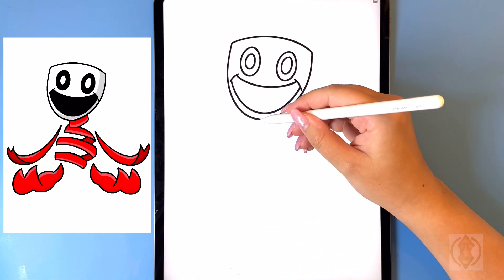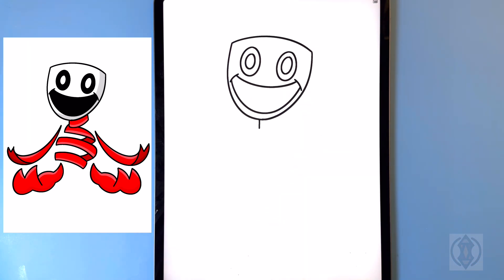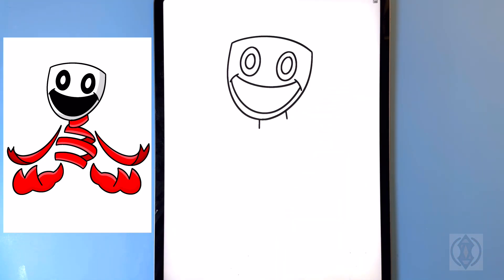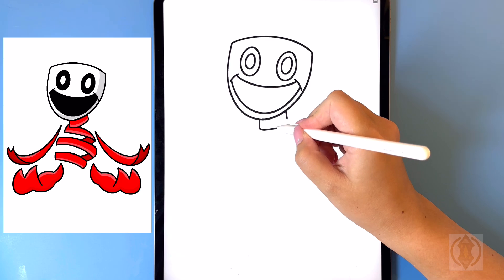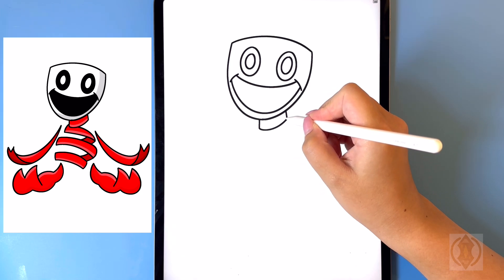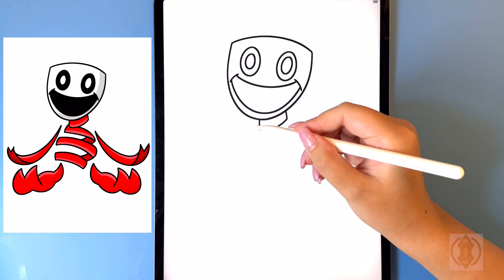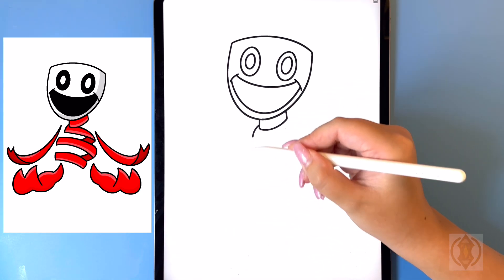Now for the neck we're going to draw a straight line that comes down. We'll do the same thing on the right, ending that on a diagonal. And now we're going to close this off with a curved line from left to right. On the top we're going to curve this line down.